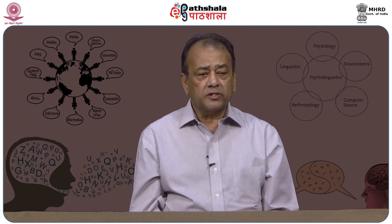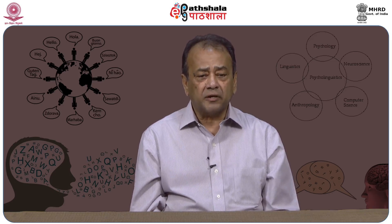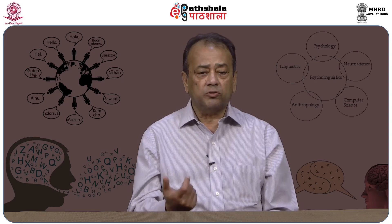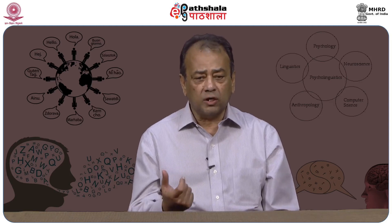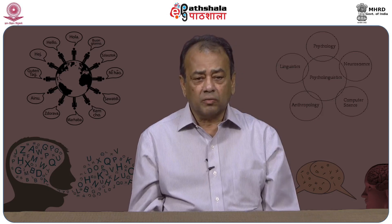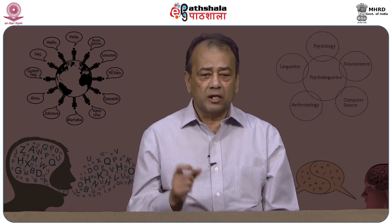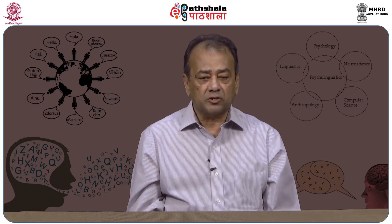When we describe an intonation unit, one approach is that of the standard British school. An intonation unit has four different parts, and the nucleus is something that must be there — which means you can have an intonation unit of a single word, for example 'John.' In answer to 'What's his name?' or 'What's your name?' we say 'John' — a single word with a falling tone.